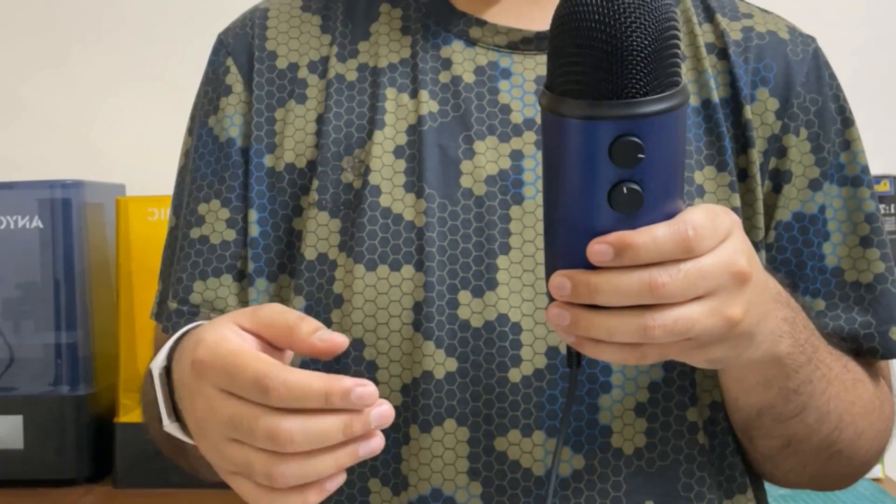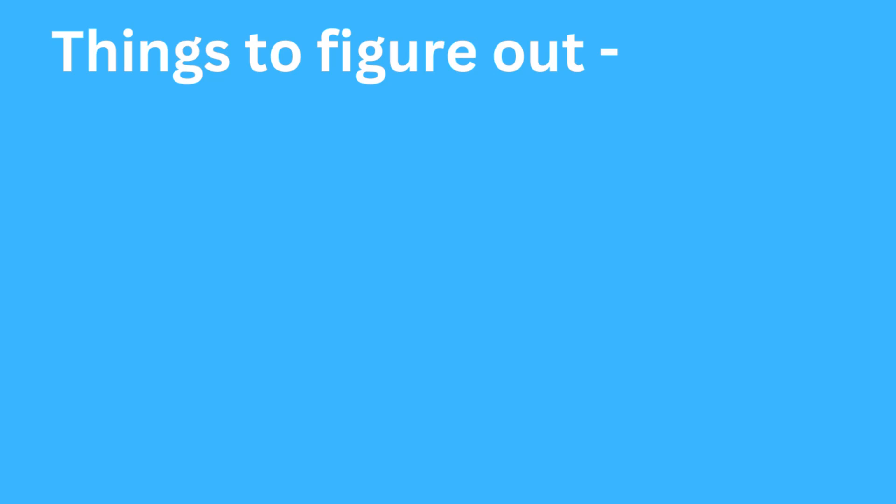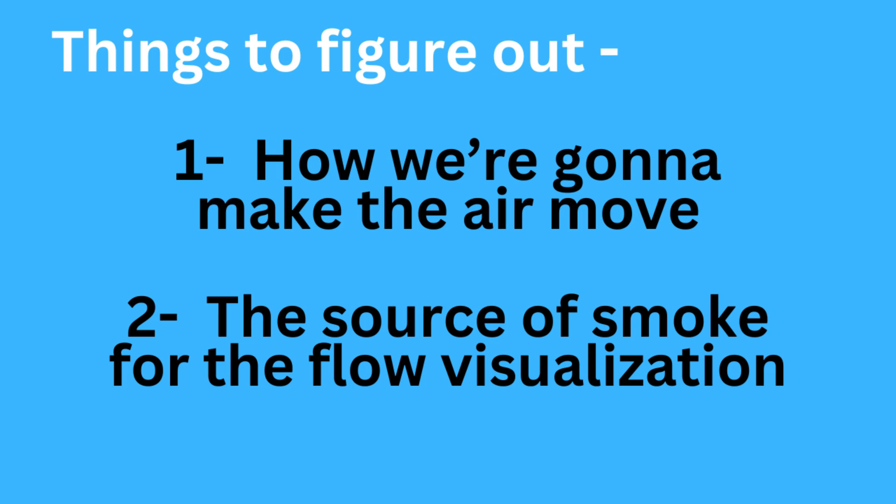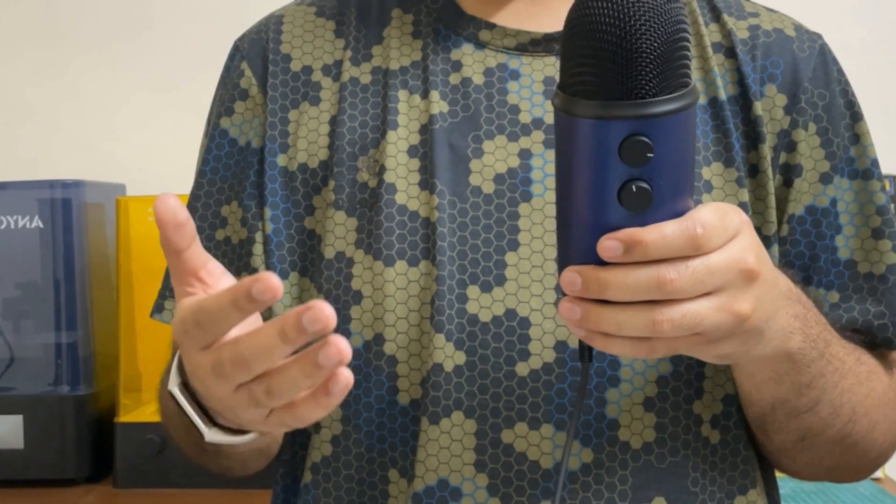Back to the video. Okay, now we need to figure out two very important things: how we're going to make the air move and the source of the smoke for the flow visualization. Let's start with the smoke problem first.